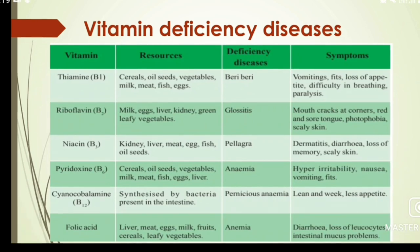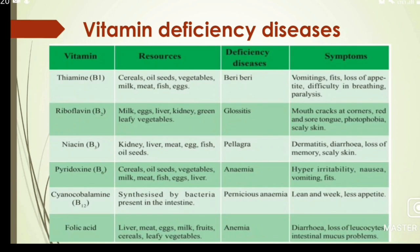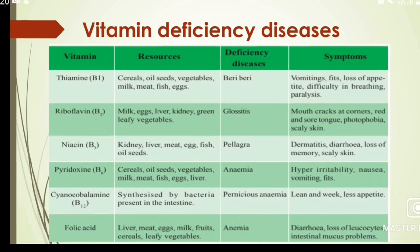Next, vitamin deficiency diseases. Vitamin B1 is Thiamine. Rich food sources include cereals, oil seeds, vegetables, milk, meat, fish, and eggs. The deficiency disease is Beriberi. Symptoms are vomiting, loss of appetite, difficulty in breathing, and paralysis.